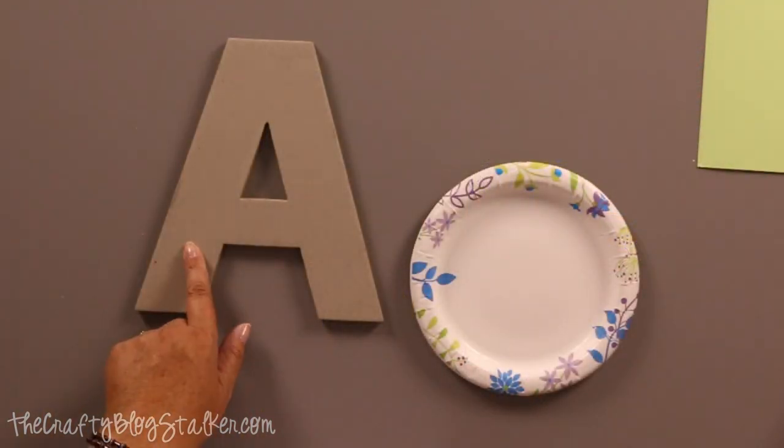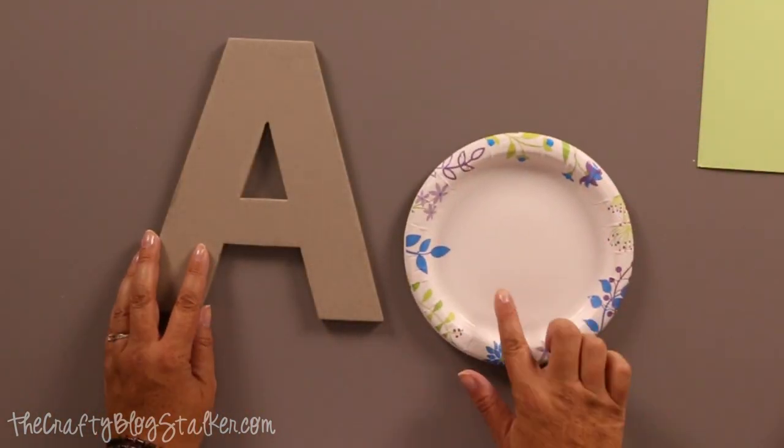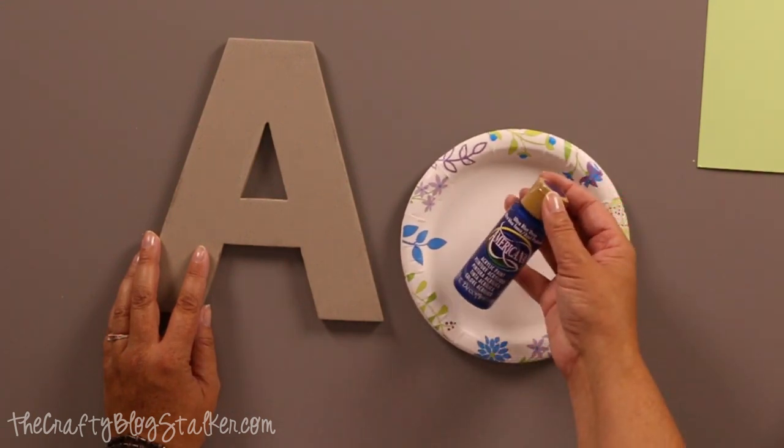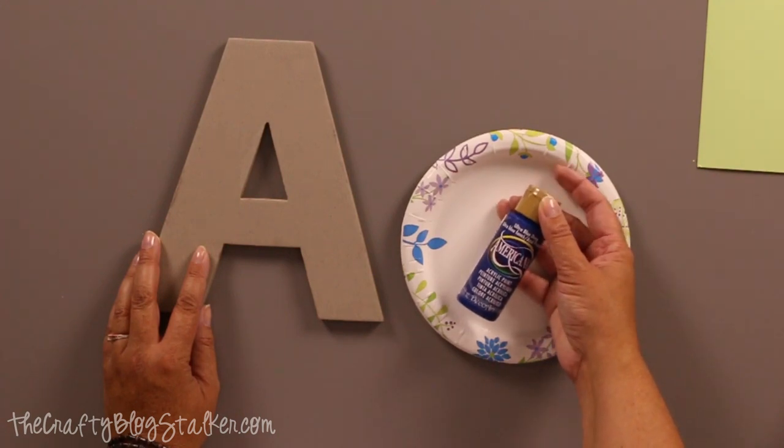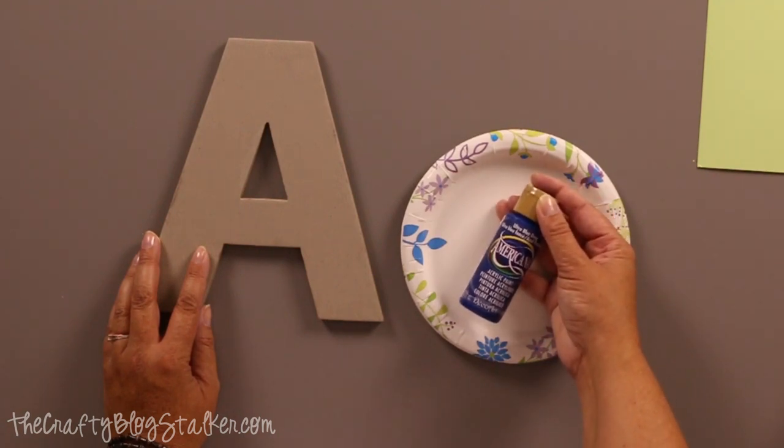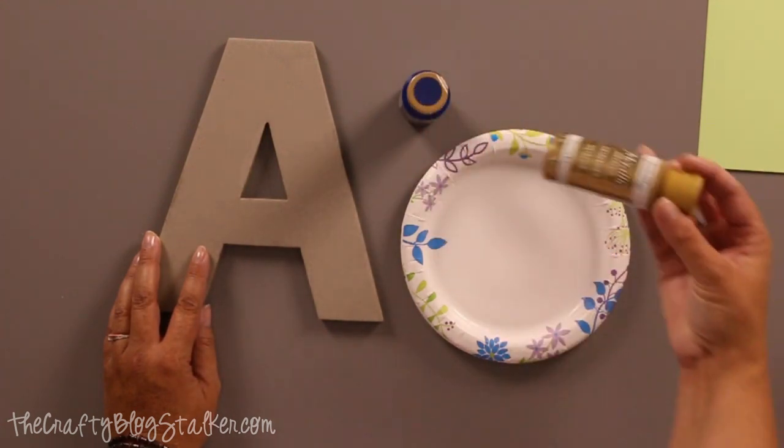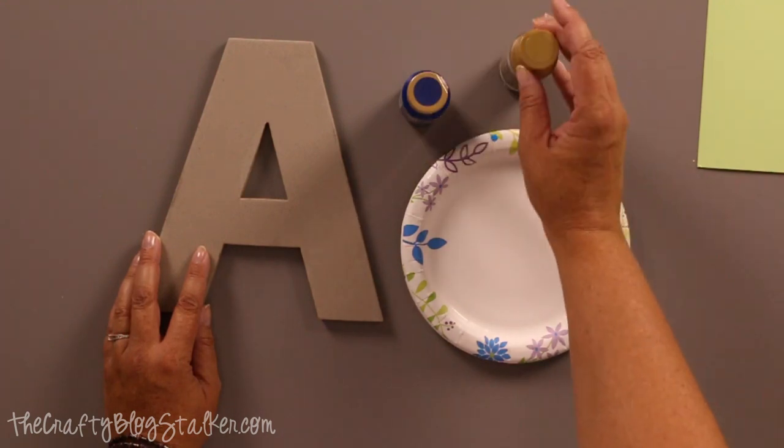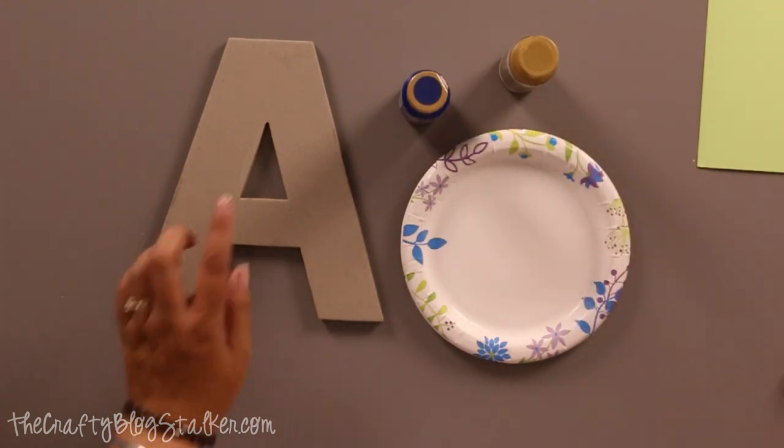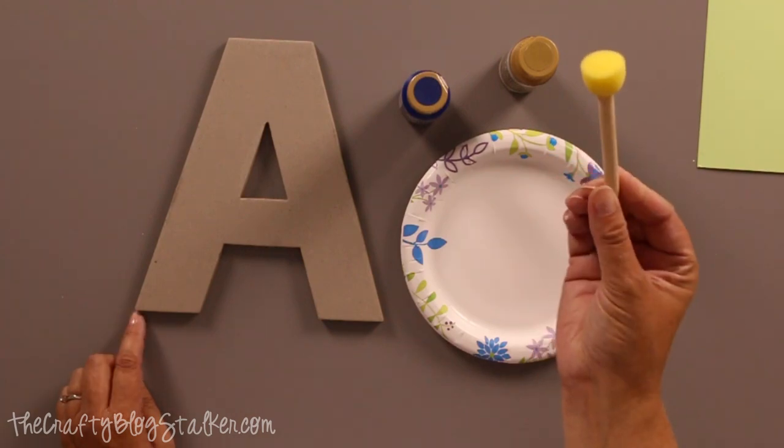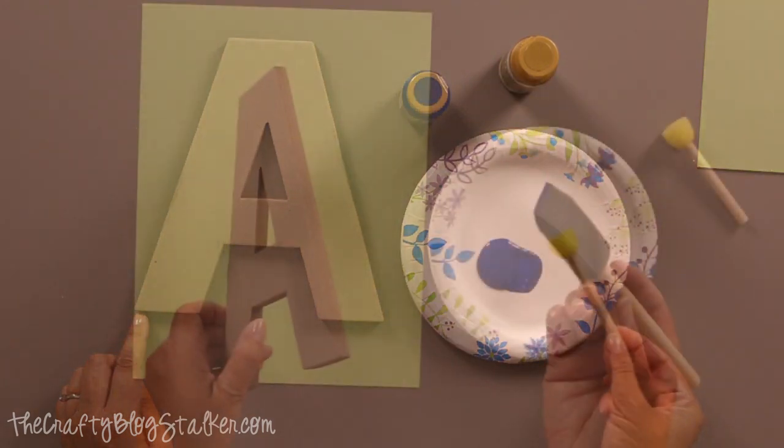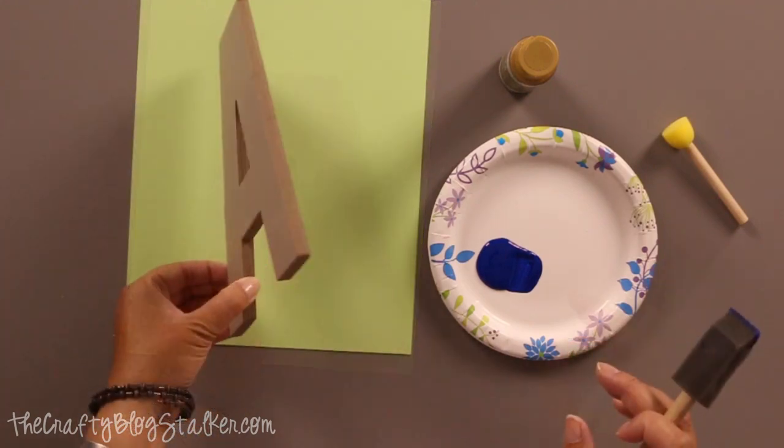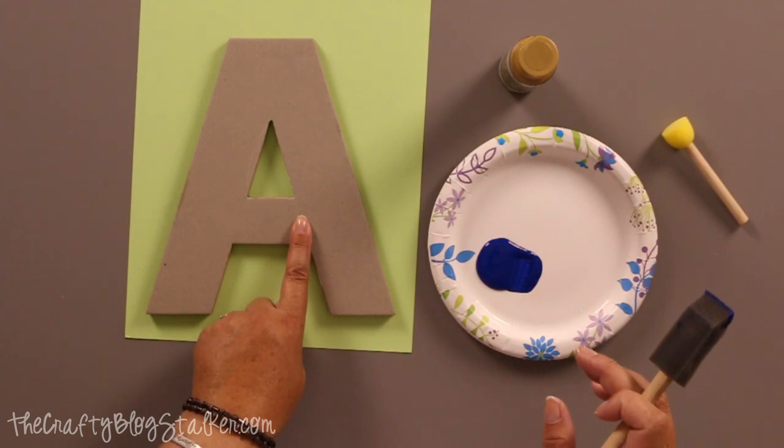For this letter, I'm going to use a paper plate again for my palette. I've got a dark blue because remember the colors of my kitchen are blue, yellow and gray. I've also got a metallic paint that we're going to put polka dots all over with this really cool sponge dauber. This is a chipboard letter, not wood, so I'm hoping I can do one coat of the blue, but I'm not sure.